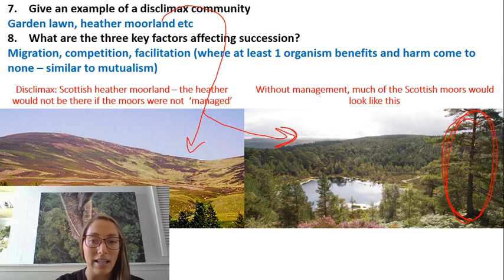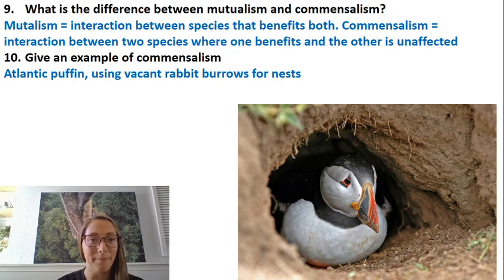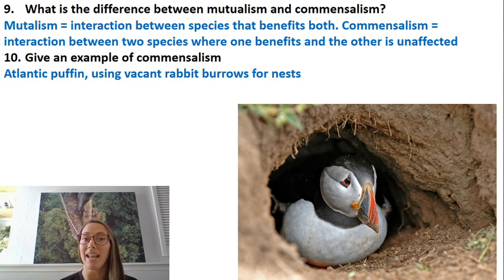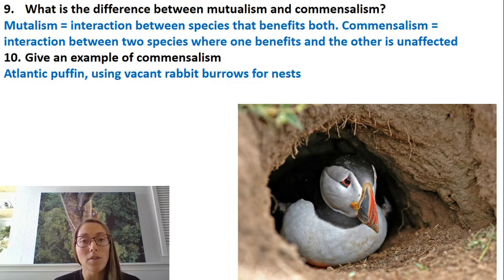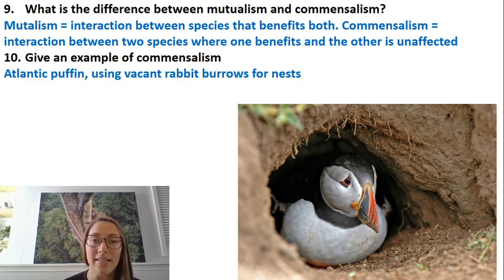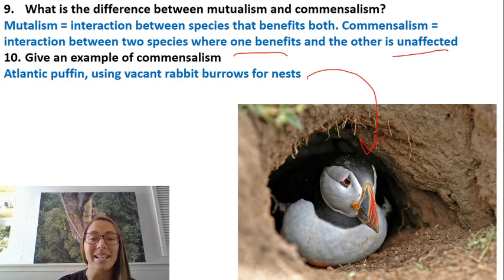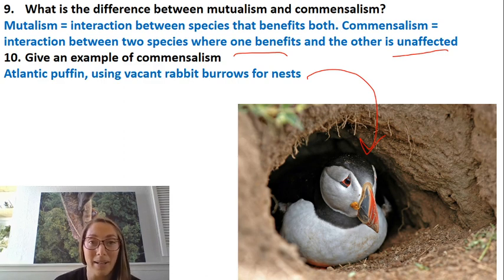A couple more key terms: mutualism is an interaction between species that benefits both. For example, bacteria living in a cow's rumen benefit because the cow eats grass providing food and a warm environment, while the cow benefits because the bacteria produce cellulase, an enzyme the cow cannot produce itself. Commensalism is slightly different — one species benefits and the other is unaffected. A good example is the Atlantic puffin, which nests in vacant rabbit burrows: the puffin benefits by having a nest site, but the rabbit is unaffected as it has already left.